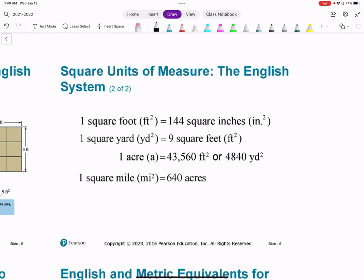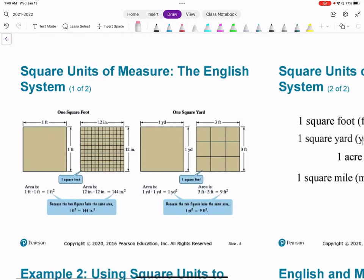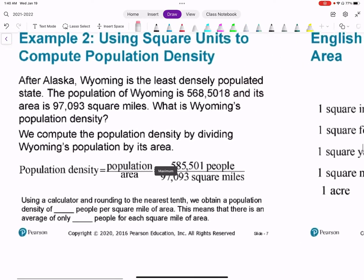Here are some conversion rates for reference. 1 square foot is 144 square inches. 1 square yard is 9 square feet. 1 acre is 43,560 feet squared, or 4,840 yards squared. And 1 square mile is 640 acres. You could convert it to feet or yards if needed for your assignment or the question you're working on.